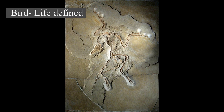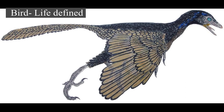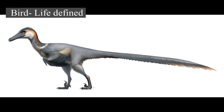Many social species pass on knowledge across generations, which is considered a form of culture. Birds are social, communicating with visual signals, calls, and songs, and participating in such behaviors as cooperative breeding and hunting, flocking, and mobbing of predators.